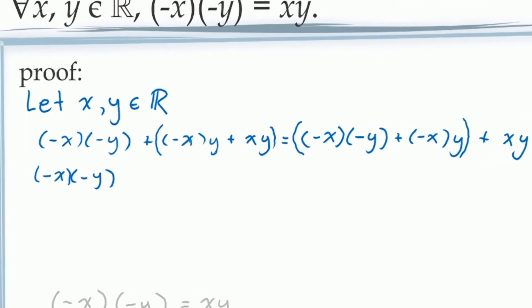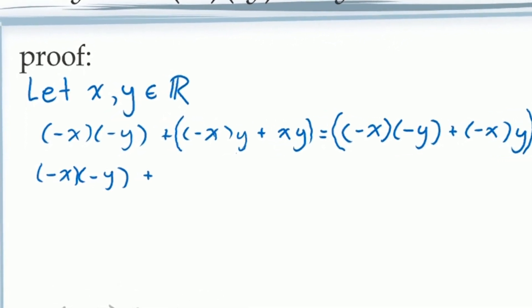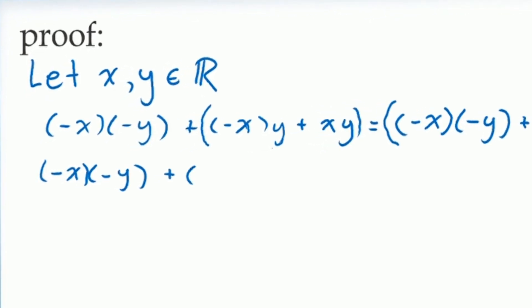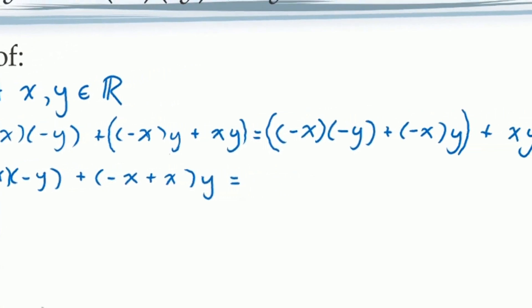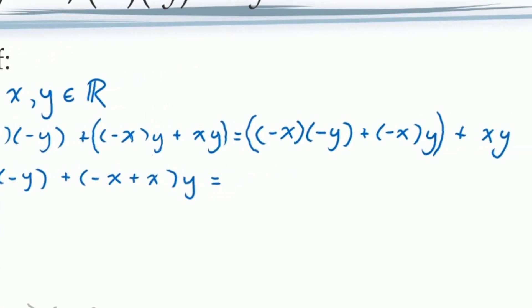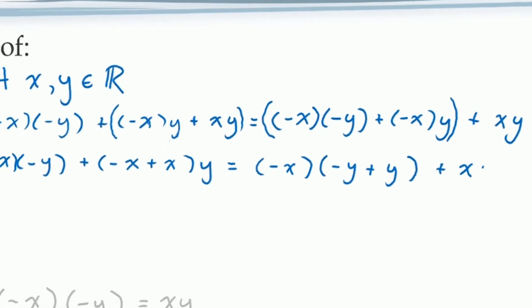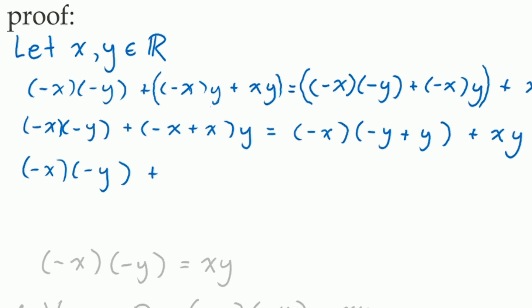Starting with the left-hand side, we can notice that the two terms in brackets share a factor of y. By applying the distributive law, we can factor out this common y. Similarly, on the right-hand side, the two terms in brackets share a factor of negative x, and again, using the distributive law, we can factor this out. We now have in brackets on the left-hand side the expression negative x plus x, which evaluates to 0 because of Axiom A4. On the right-hand side, we have the expression negative y plus y, which similarly evaluates to 0 because of Axiom A4.